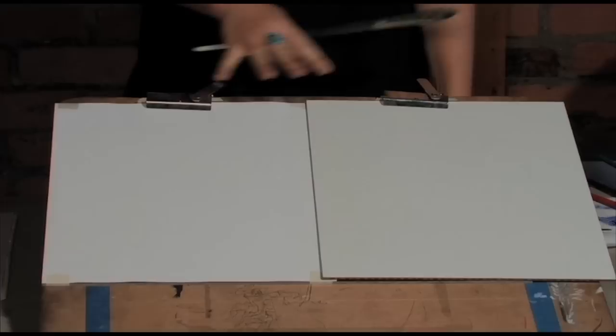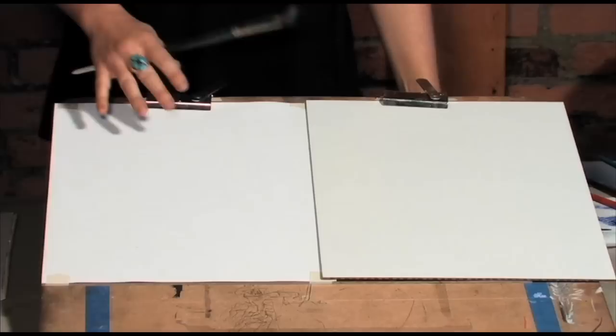I've got a couple different surfaces here to work on to make some marks on both to compare the two. One's smoother, this is the pre-gessoed masonite, and this is canvas.